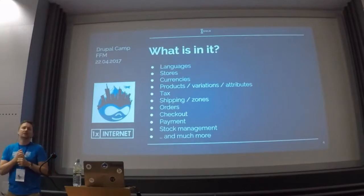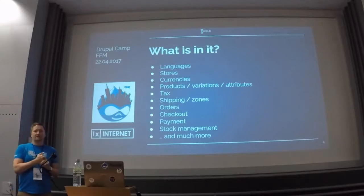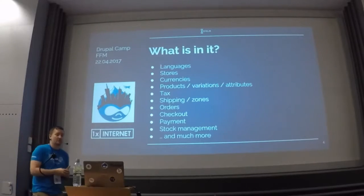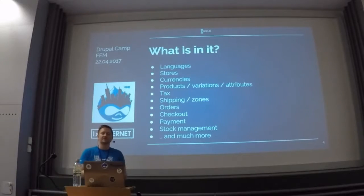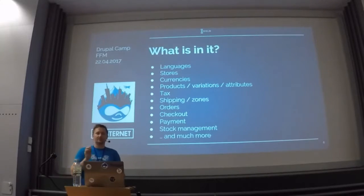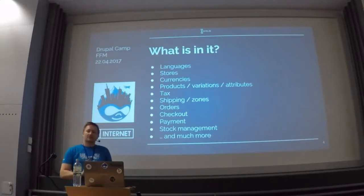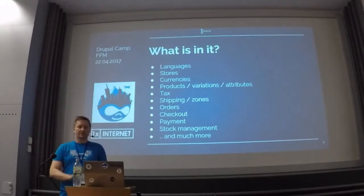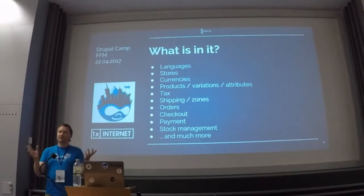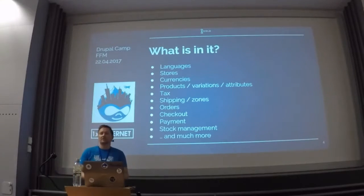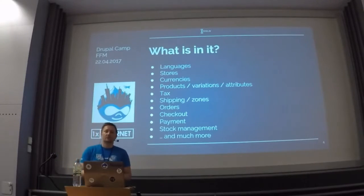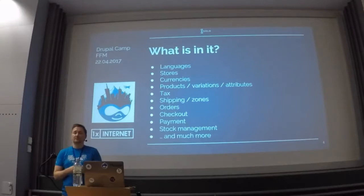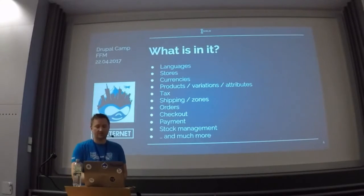Here's a quick overview of the new Commerce and what's in it. I'm not going to compare this to Drupal 7 Commerce, but you have a full feature set needed in a modern e-business application: languages, stores — including different stores within one website — currencies, product variation and attribute support, taxation, shipping, shipping zones and areas, full flexibility, orders, checkout, payment, stock management, and everything else. All of this is built into the web shop I'm going to show.